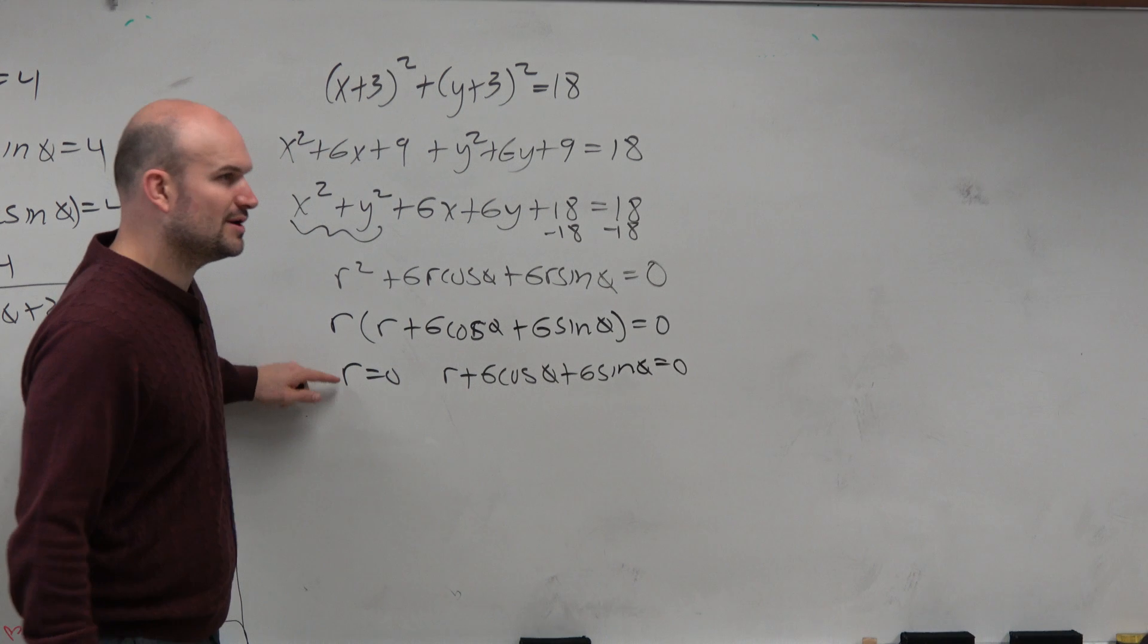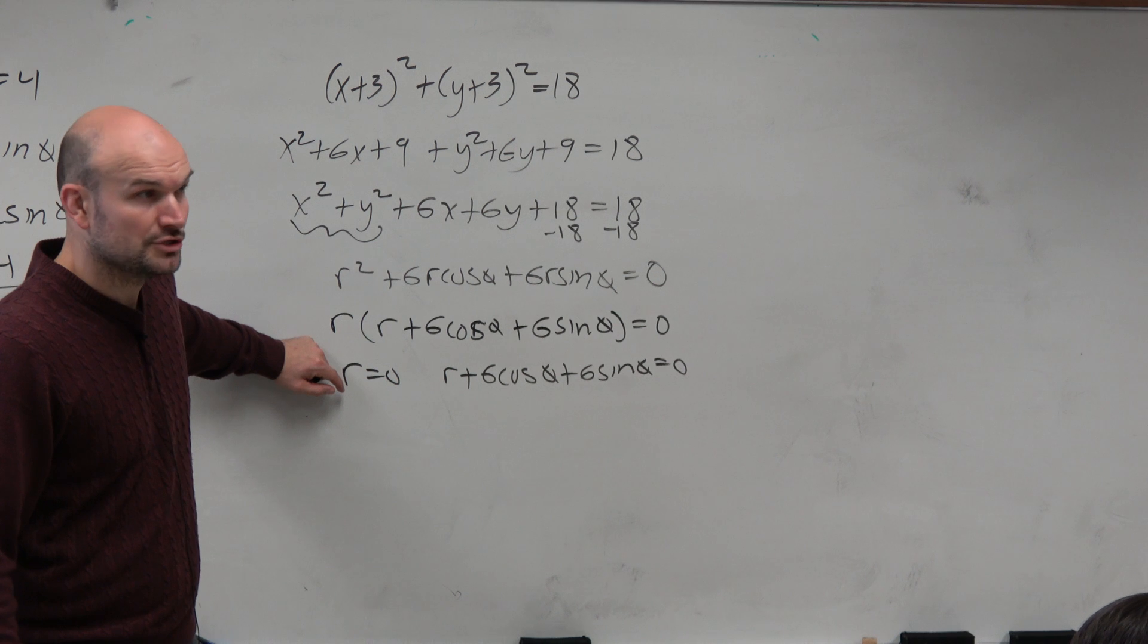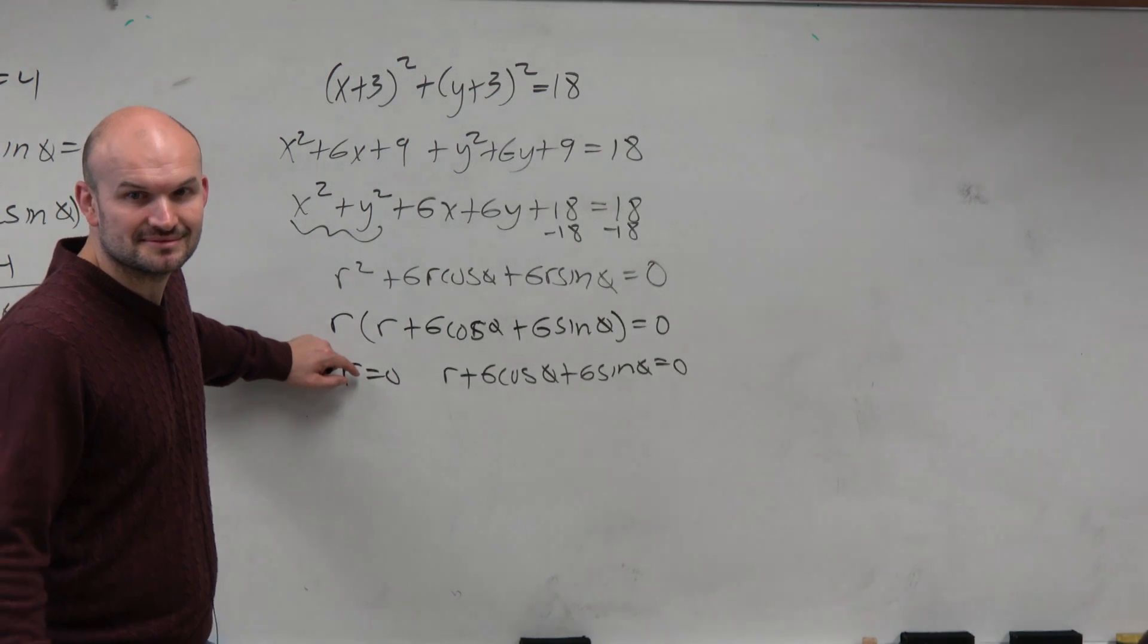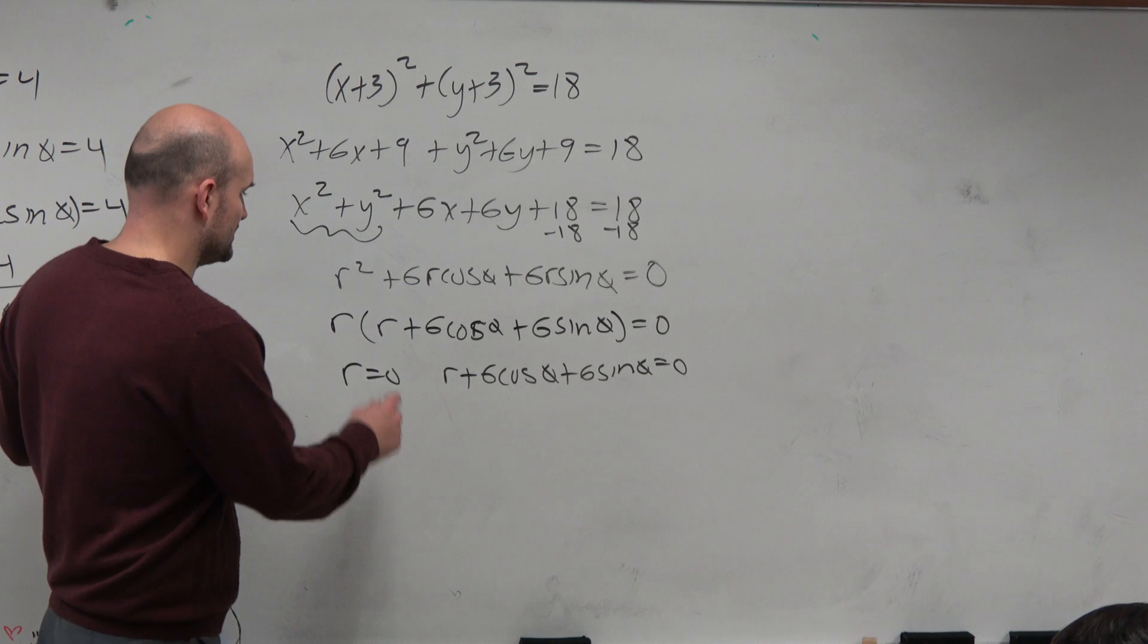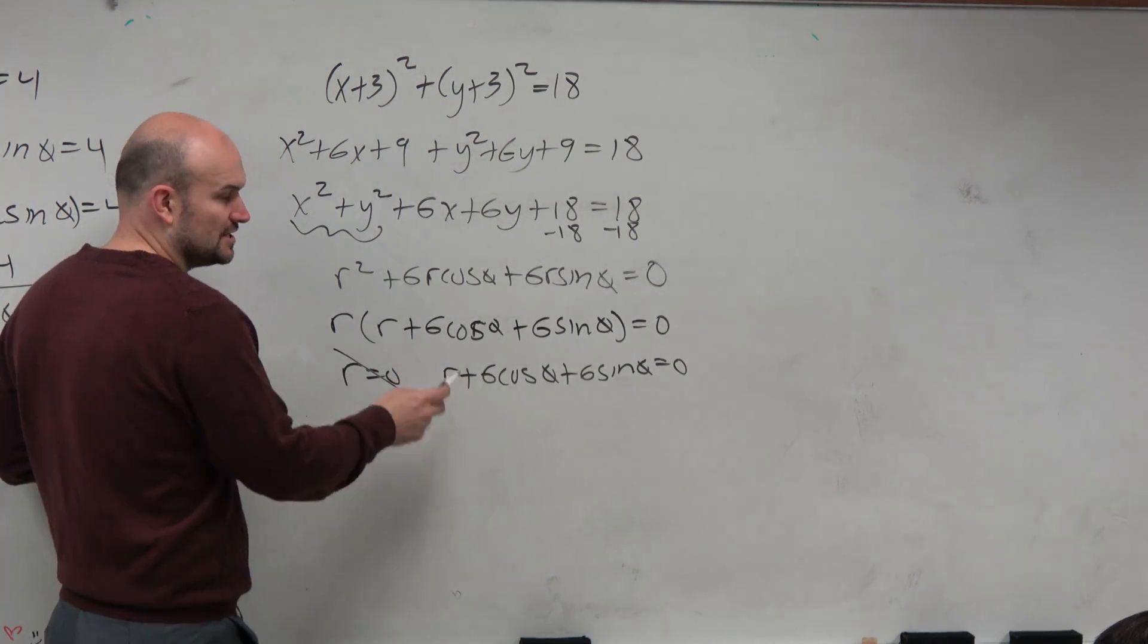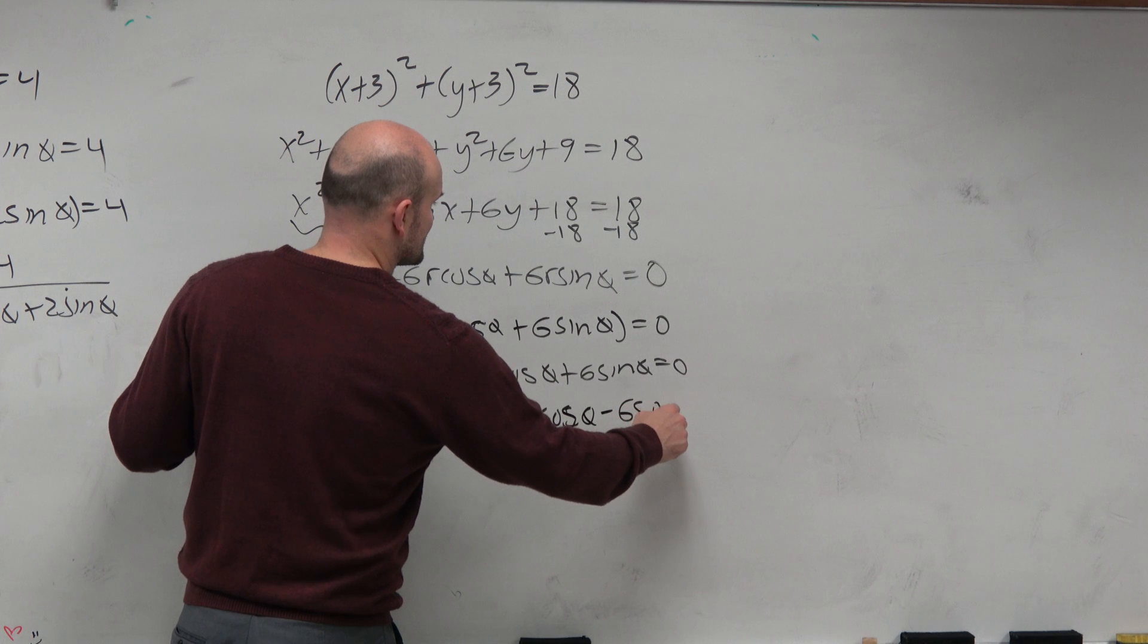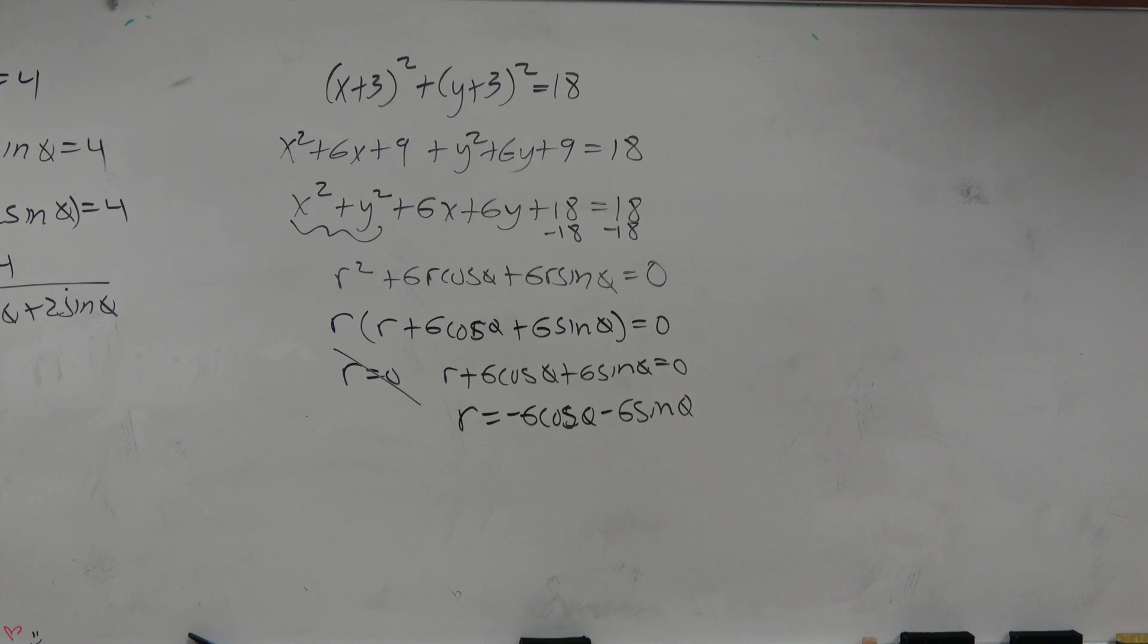So does this equation make sense? r is equal to zero? No. You have a distance away from zero. Is that going to produce a graph? No. It doesn't even produce a graph, right? So we're just going to eliminate that. And we're just going to focus on this equation, which is r equals negative 6 cosine of theta minus 6 sine of theta. And that would be our answer choice.